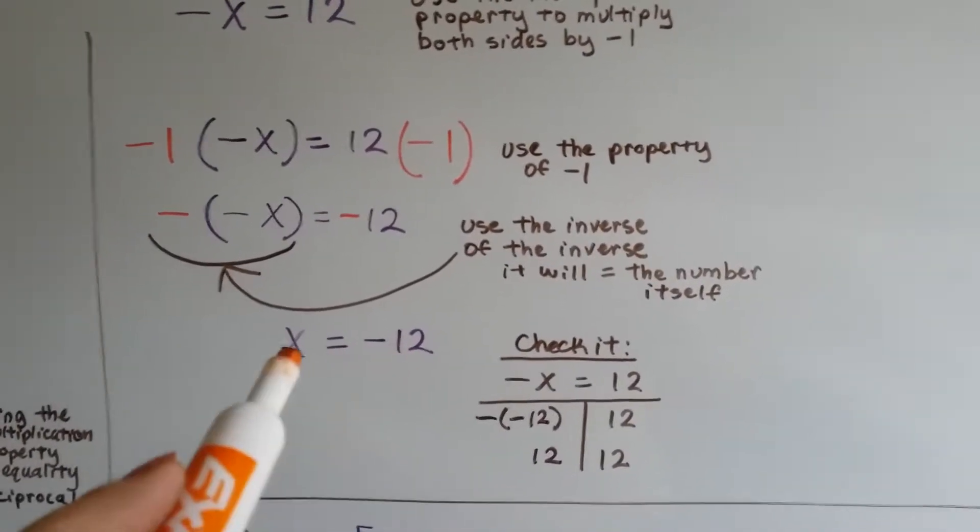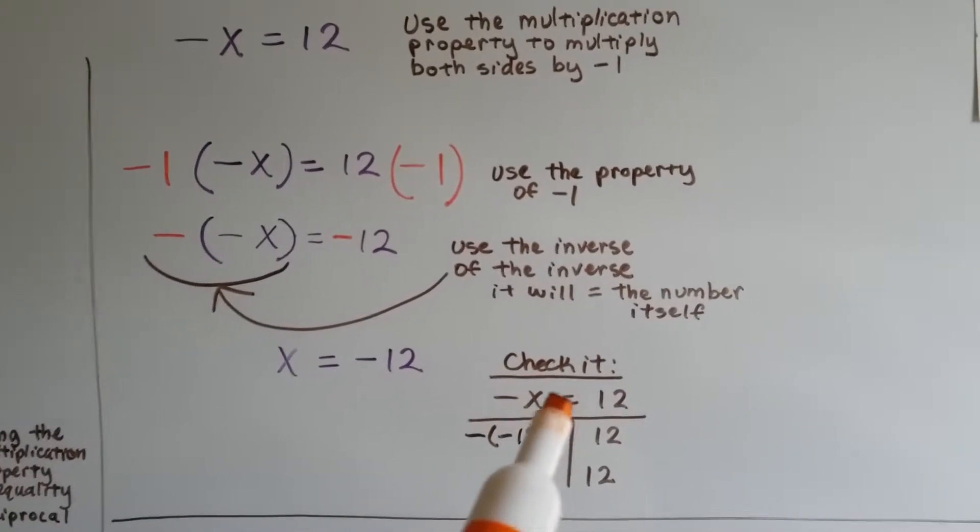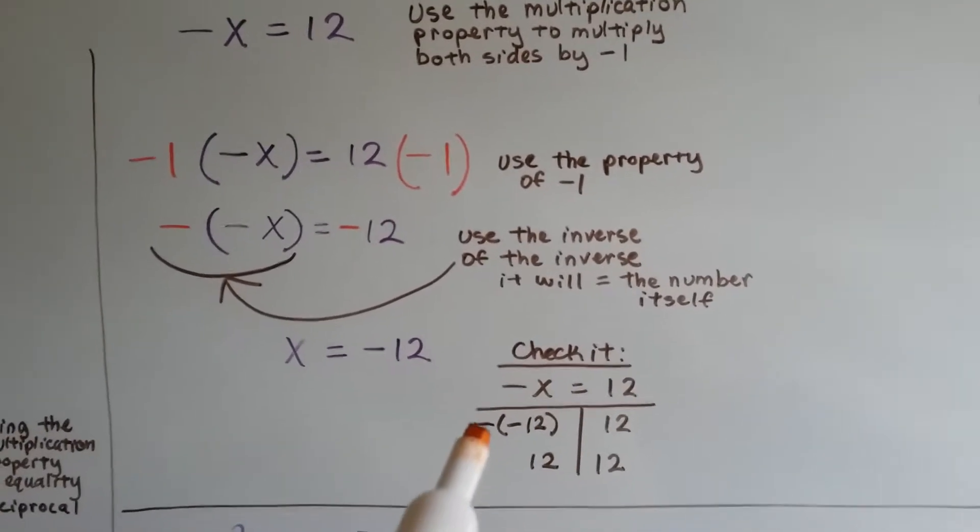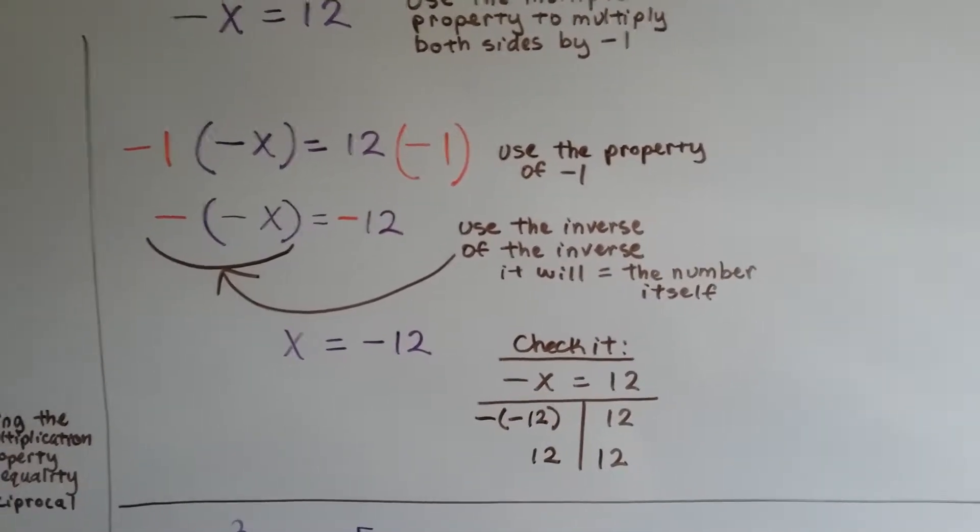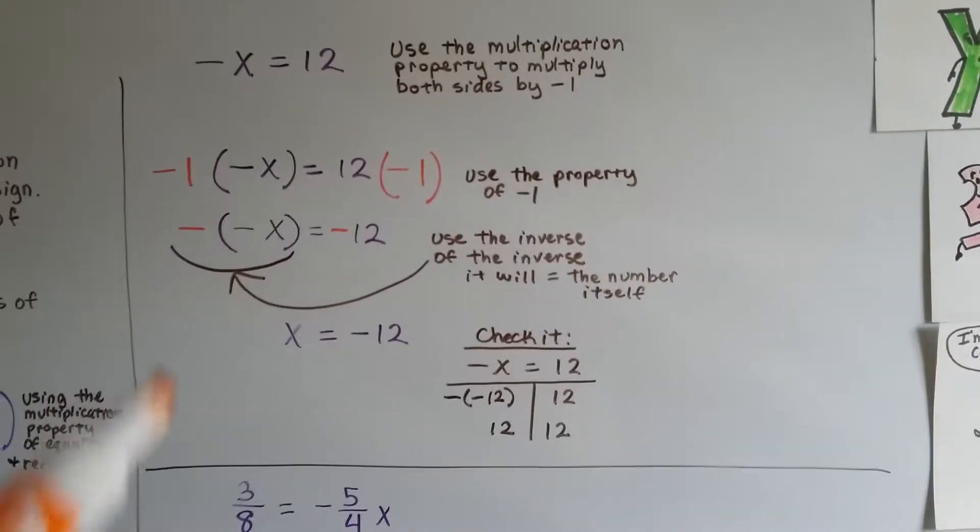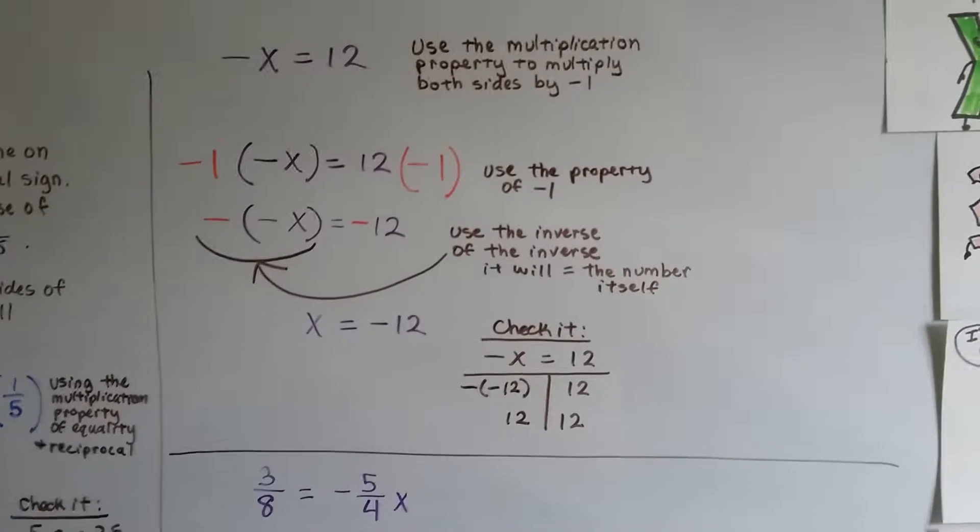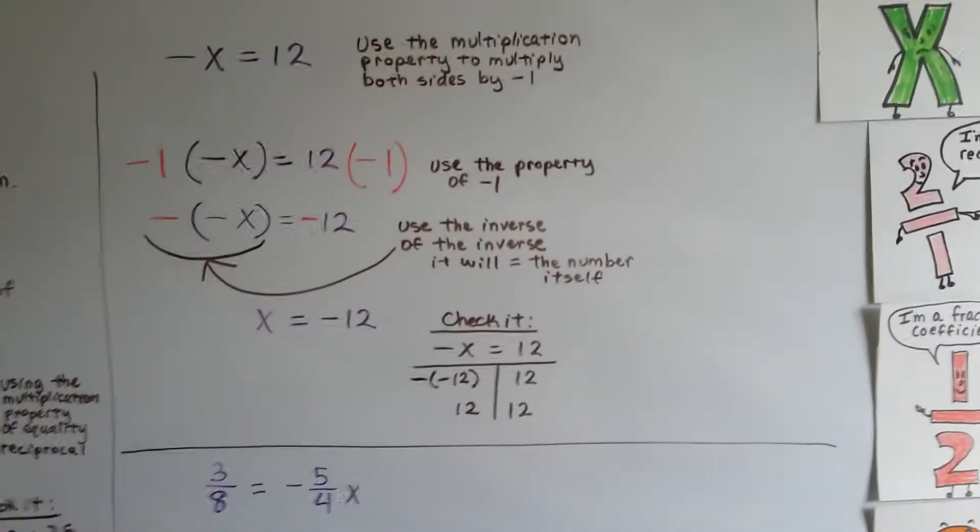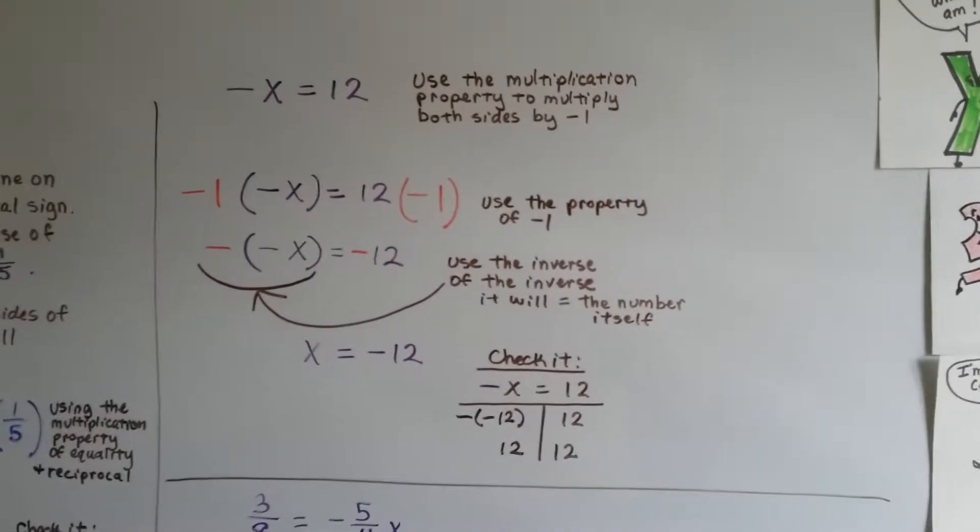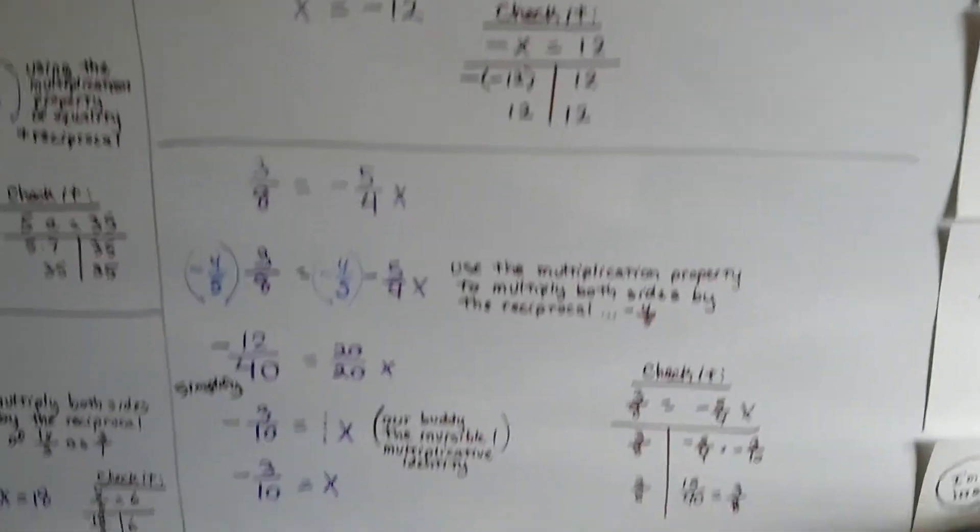Let's plug in negative 12 where the x was. We had a negative x equals 12, and now where that x is, we're going to put a negative 12 in. So now we have a negative of a negative 12. Well, that's a positive 12. It's kind of crazy the way you have to show your work when actually all you have to do is just move that negative sign over to the other one. Sort of like the last problem we had where I showed you that the negative x could equal 11 or x could equal negative 11.